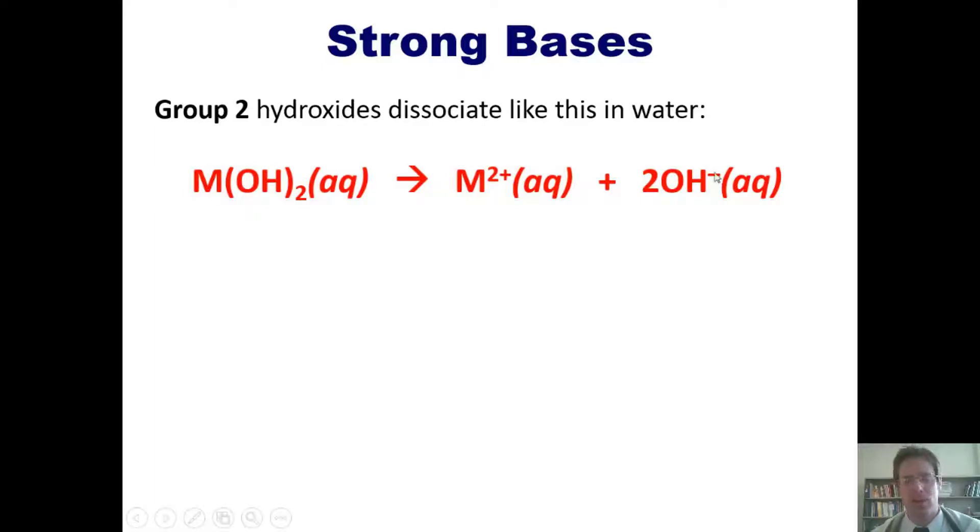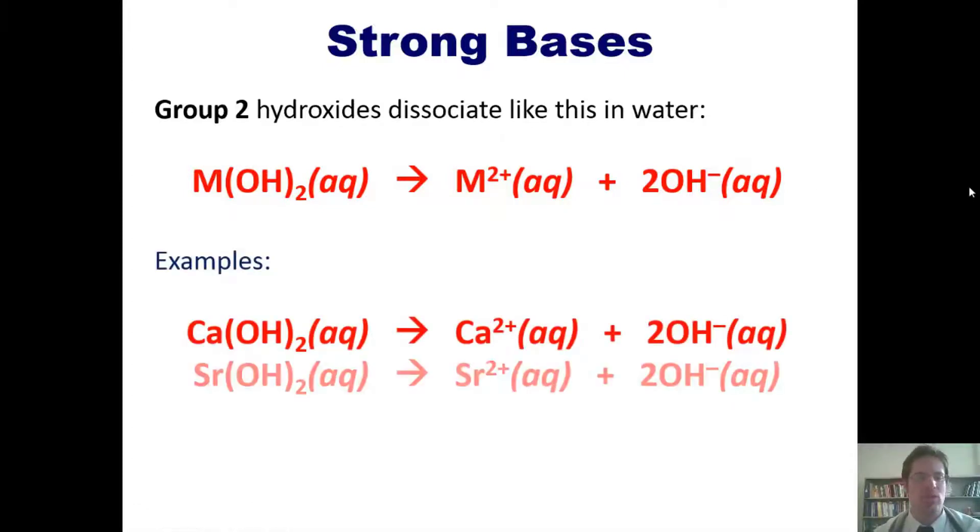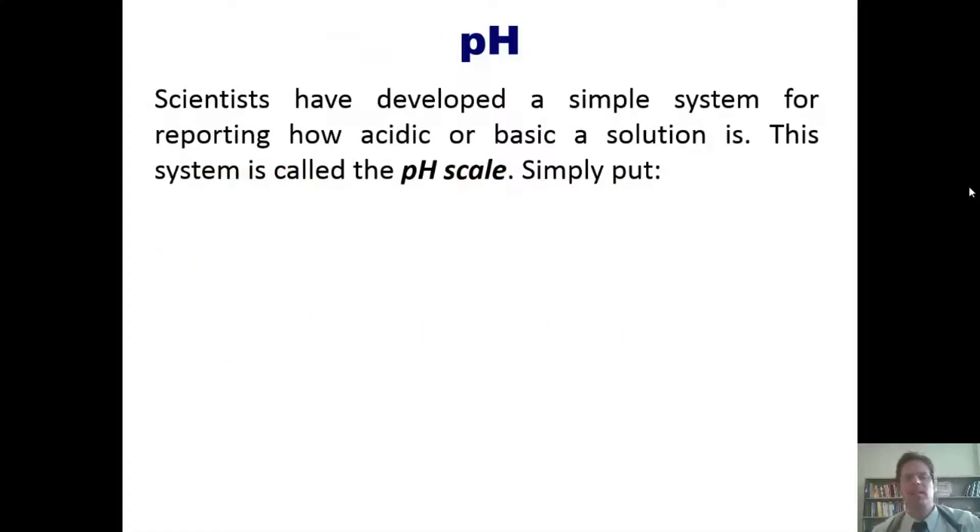Group 2 hydroxides dissociate like this in water, where eventually the substance will give off two equivalents of hydroxide and become a +2 charged cation. Examples of these include calcium and strontium hydroxide, as well as others that I'm not showing here.